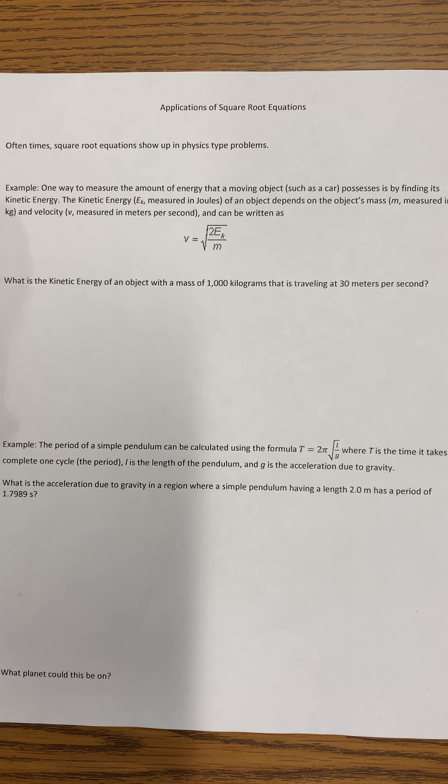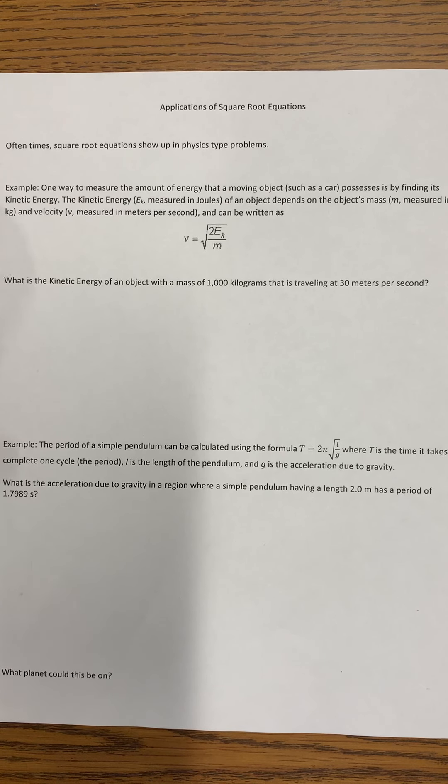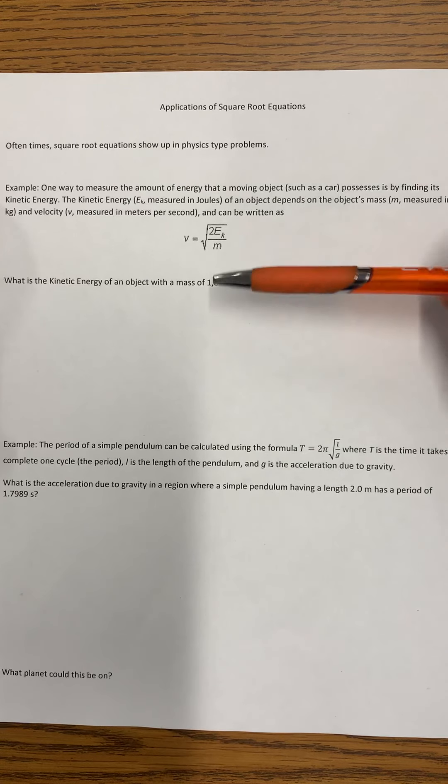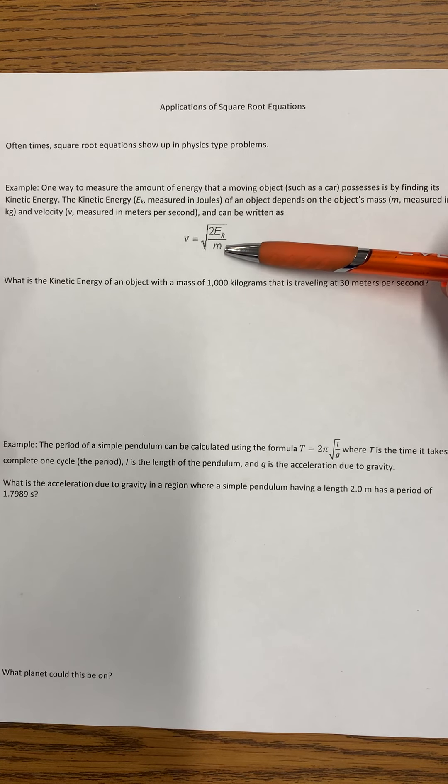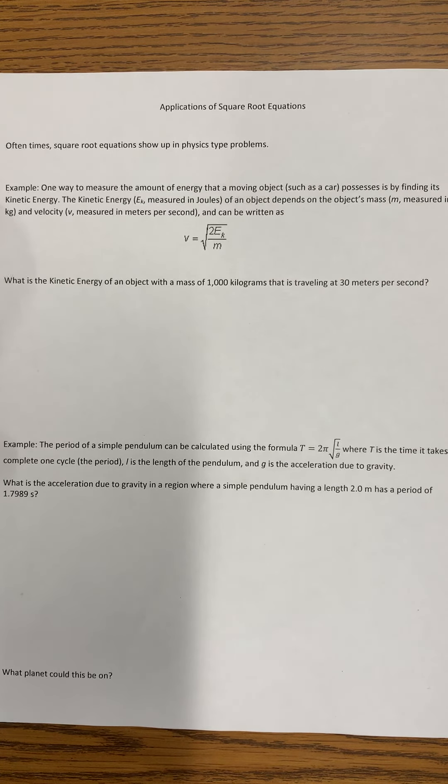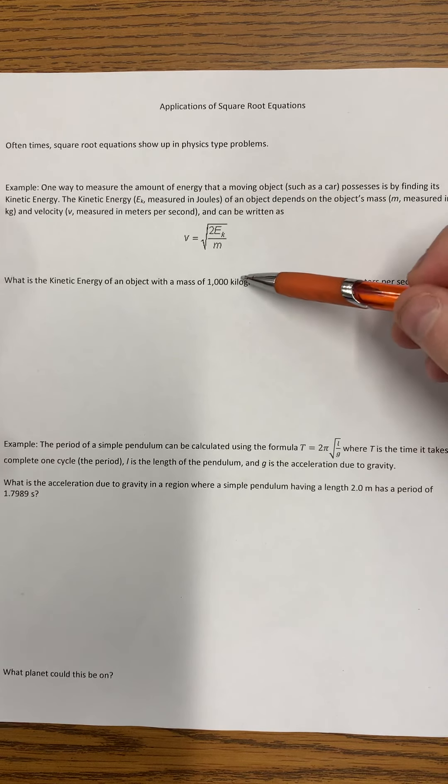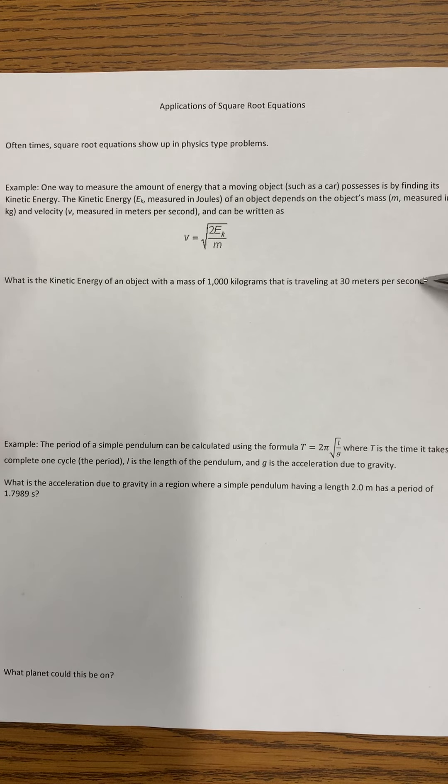One way to measure the amount of energy that a moving object, such as a car, possesses is by finding its kinetic energy. The kinetic energy, E sub k, measured in joules of an object depends on the object's mass, measured in kilograms, and velocity, measured in meters per second, and can be written as: the velocity equals the square root of 2 times the kinetic energy divided by the mass. What's the kinetic energy of an object with a mass of 1,000 kilograms that is traveling at 30 meters per second?